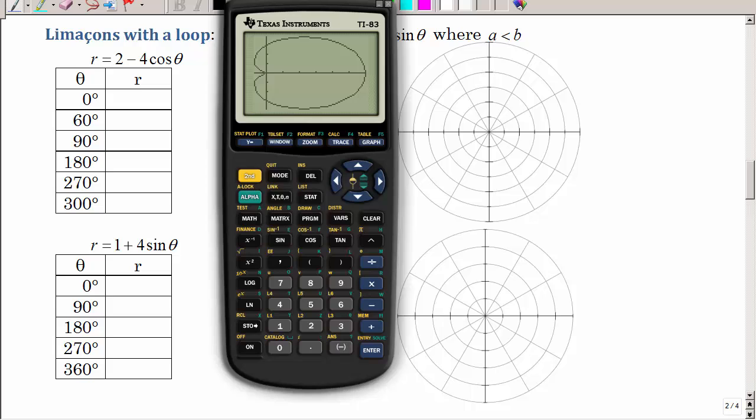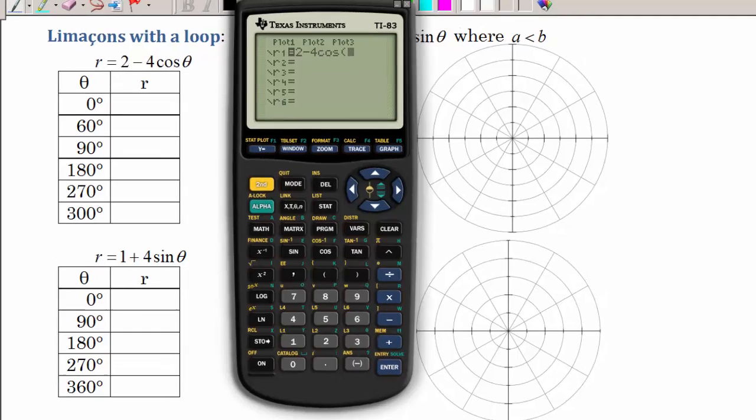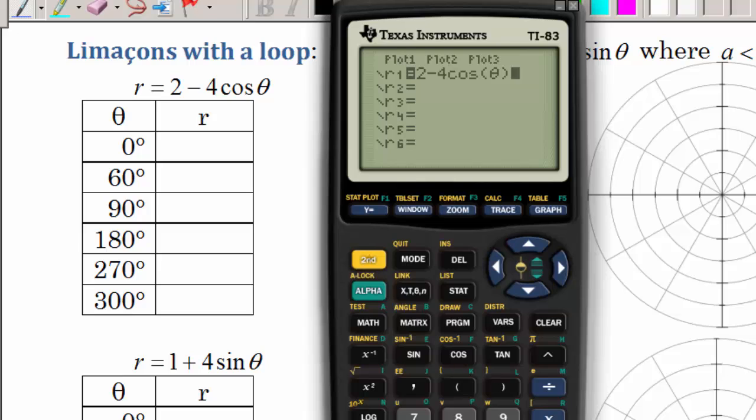Next thing we're going to look at are limaçons with a loop. So these numbers no longer are going to be equal. The first number is going to be smaller than the second number. But all that symmetry is still going to come into play. All right, so I'm going to pop open my calculator. I'm going to clear that. I'm going to type in 2 minus 4 cosine theta.